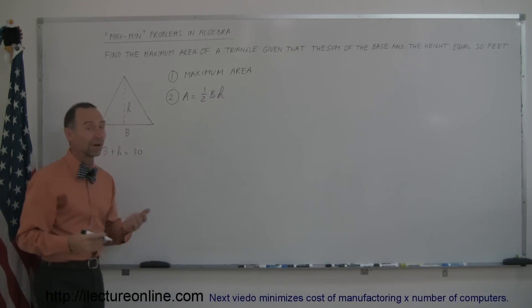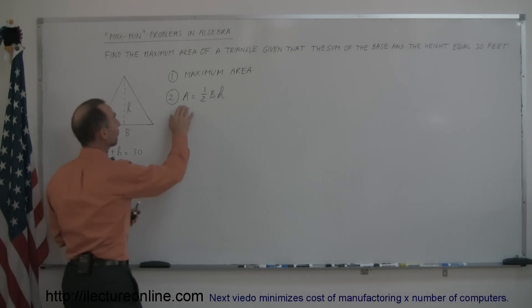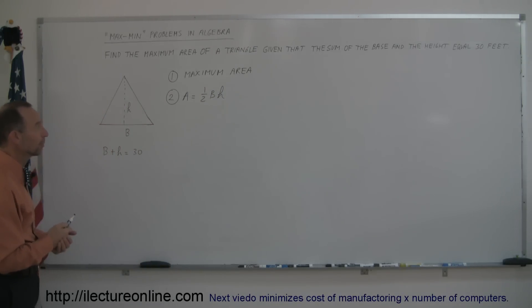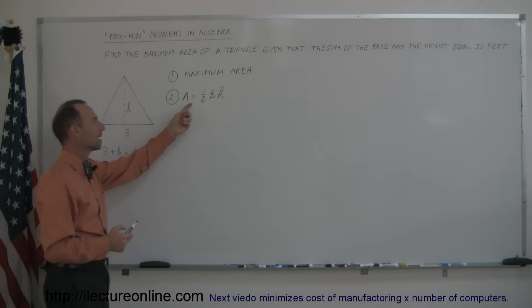The second thing you do is try to find an equation that defines what you're trying to maximize, in this case area. Now you notice that the area is now defined with two variables, and in order for us to solve the problem, you need to have just a single variable.